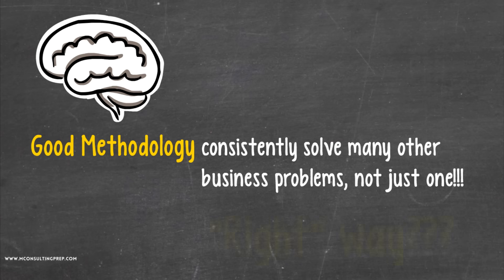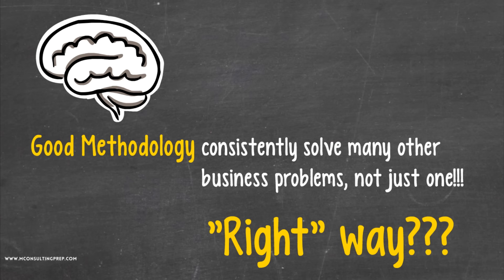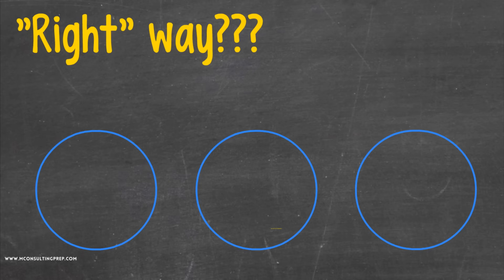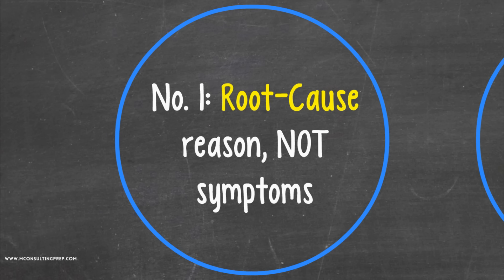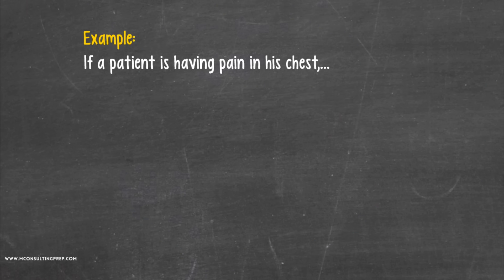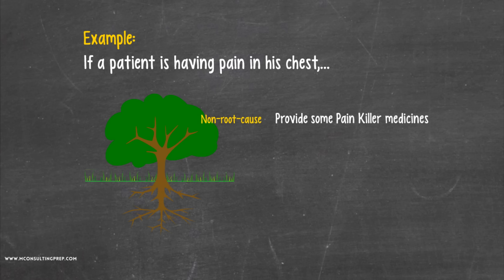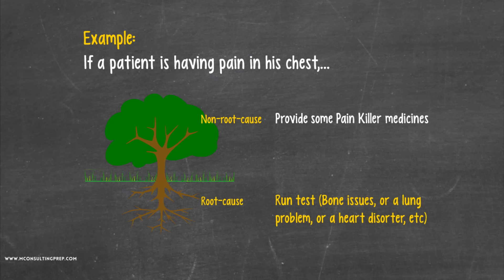So what is the right way to solve cases? There are several components to this. Number one, a good method will look for the root cause or reason behind the problem, not just the surface or symptom of the problem. For example, if a patient is having pain in his chest, a non-root cause approach would be to provide some painkiller medications. Whereas a root cause method would be to run tests and see what is really causing the chest pain and cure that root cause — could it be a bone issue, a lung problem, or even a heart disorder? Simply put, look for the root cause.